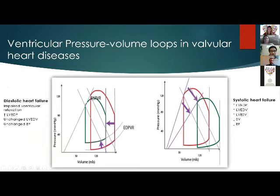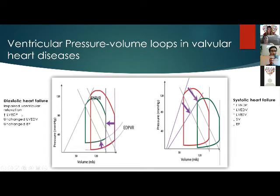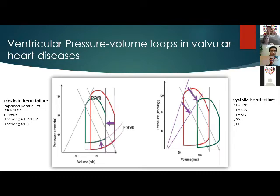These curves show changes in different types of heart failure. In systolic heart failure, left ventricular end-systolic pressure and end-systolic volume are higher, while stroke volume and ejection fraction are lower — the curve shifts downward and to the right. In diastolic heart failure, the main mechanism is impaired ventricular relaxation; left ventricular end-diastolic pressure increases while there are no changes in ejection fraction or end-systolic volume.